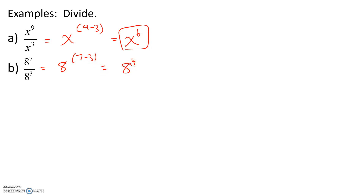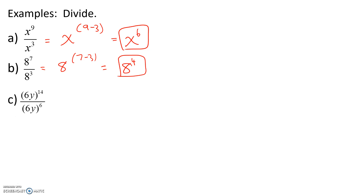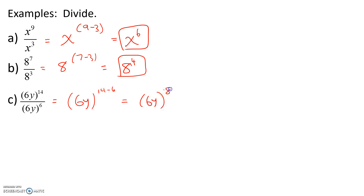We could multiply 8 to the 4th as 8 times 8 times 8 times 8, but for this example we will leave this as 8 to the 4th. Next, 6y to the 14th divided by 6y to the 6th. In this case, our base is 6y. So, our base will remain unchanged, and we will subtract the exponents 14 and 6, giving us 6y to the 14 minus 6, which is the 8th power.